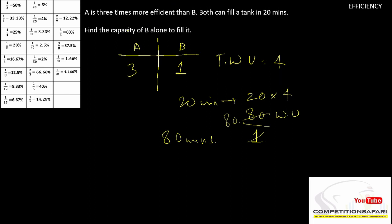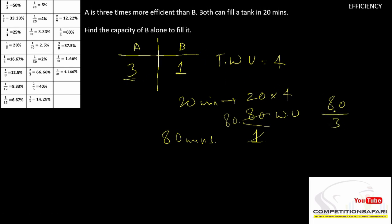If it had asked for the time for A alone, you have 80 work units and A's efficiency is 3. So the total time taken by A to fill the tank = 80 ÷ 3 minutes. You will have your answers if you use a little brain.